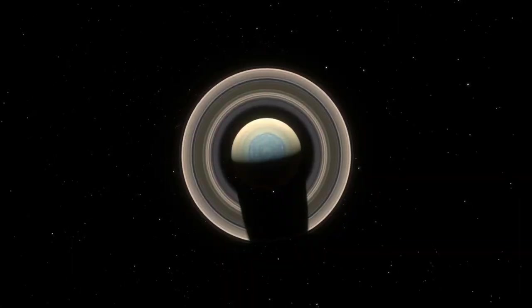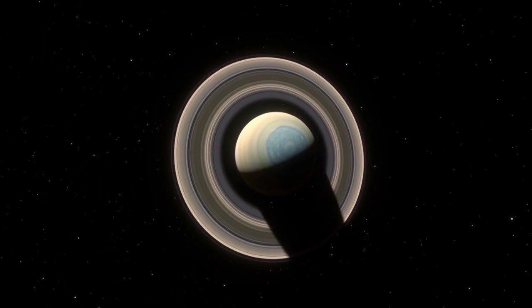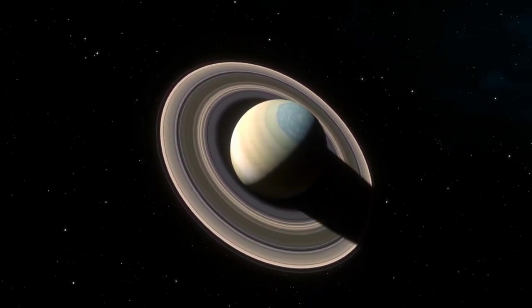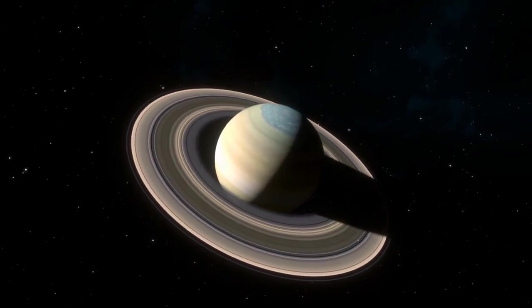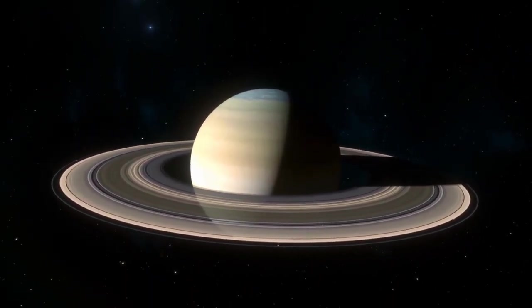Another interesting feature is Saturn's hexagonal storm, which is a large, rotating storm system located at the planet's north pole. The storm is estimated to be about 20,000 kilometers across, and is believed to have been present for at least 150 years. The hexagonal shape of the storm is believed to be caused by the planet's high-speed jet streams.